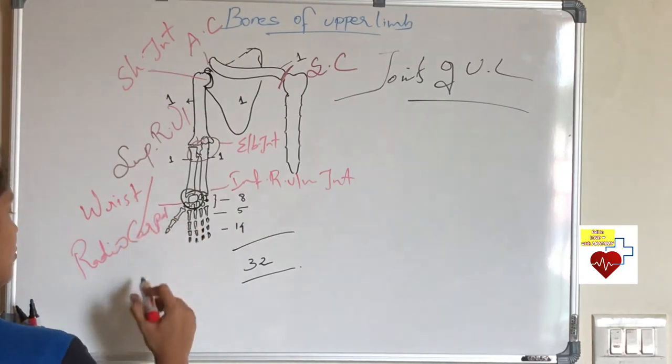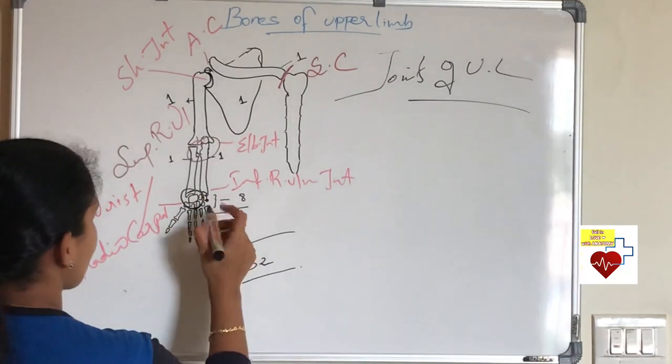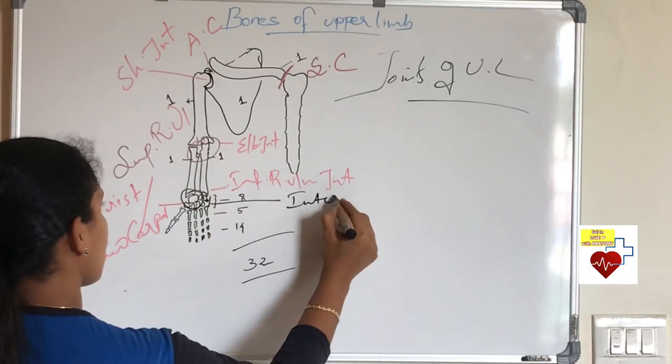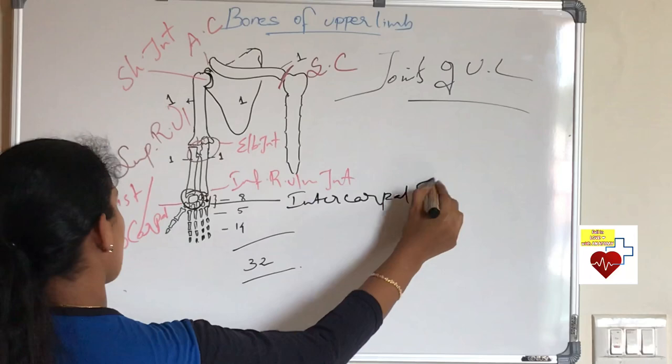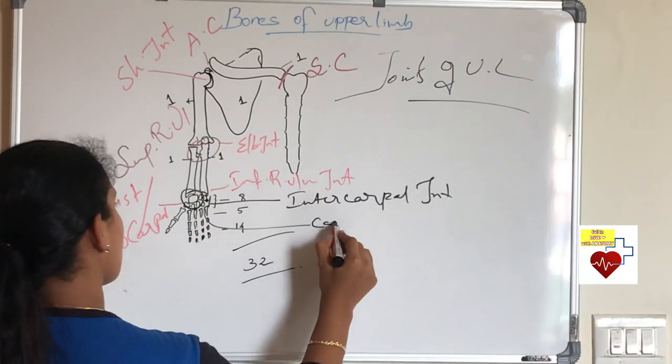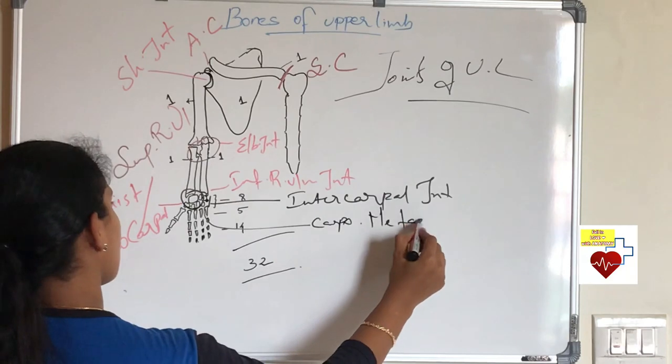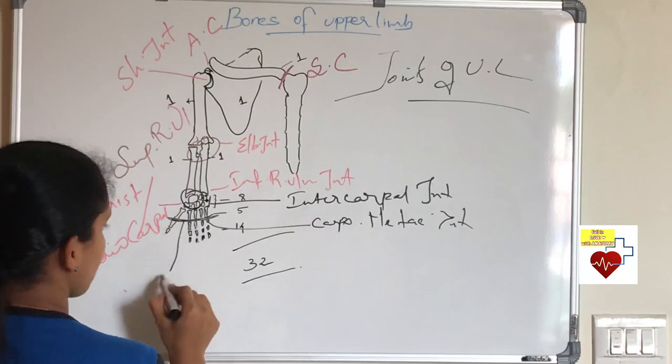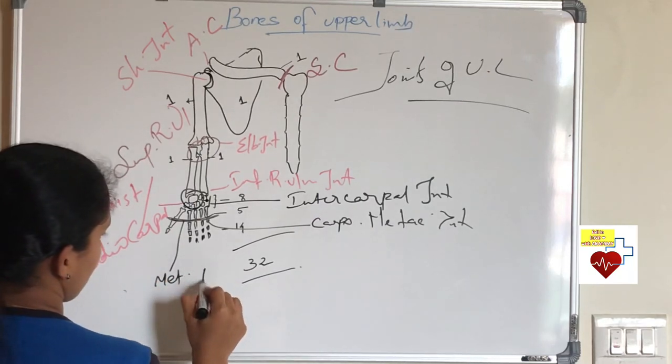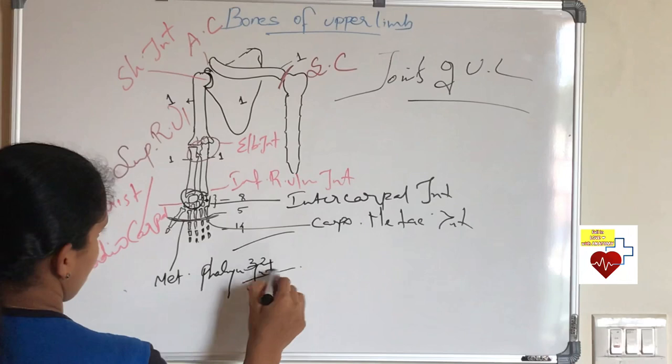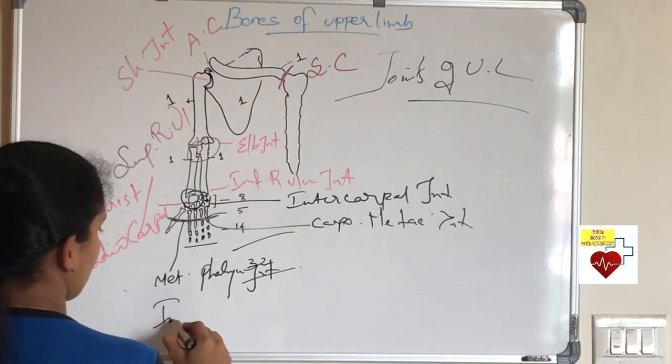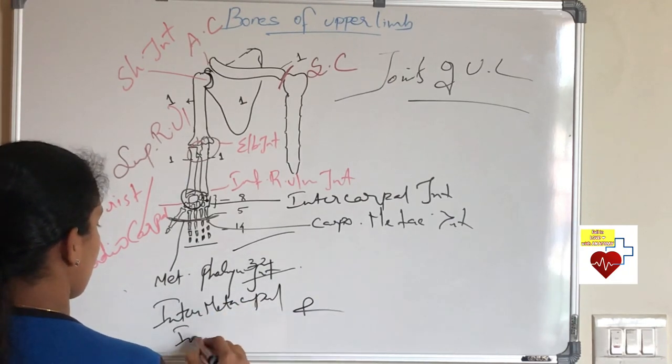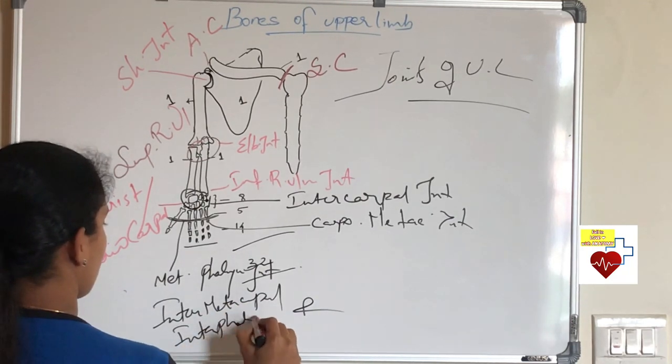Wrist joint otherwise called radiocarpal joint. And between the carpal bones you have a joint called intercarpal joint. Intercarpal meaning between carpal bones. Then the joint between carpals and metacarpals called carpometacarpal joint. First carpometacarpal joint is important. Then you have metacarpophalangeal joint. Likewise between metacarpals you have intermetacarpal joint. And between phalanges you have interphalangeal joint.